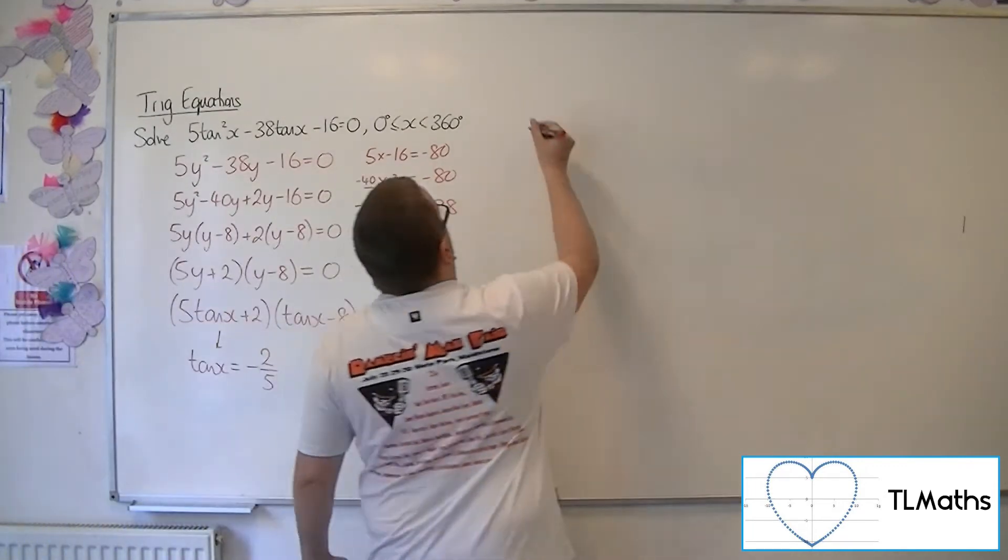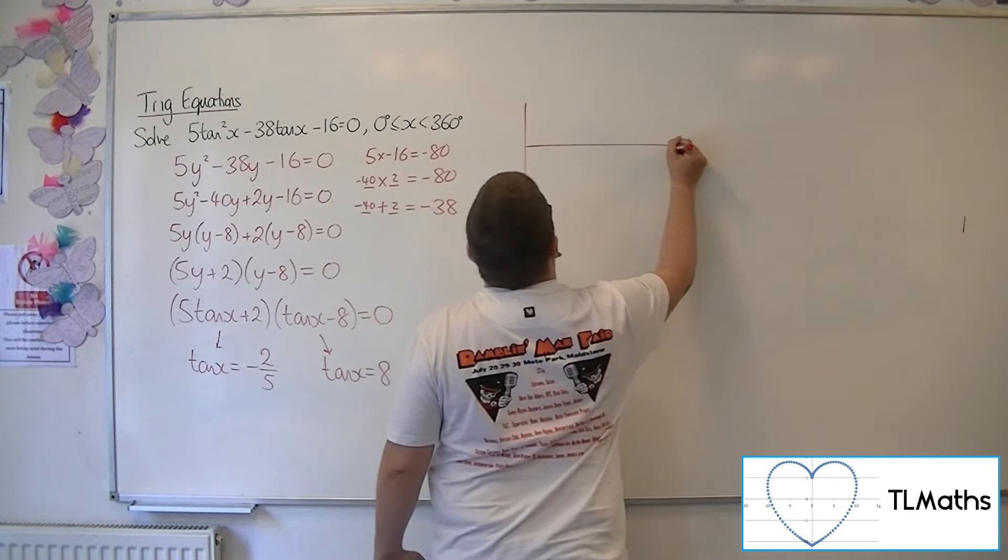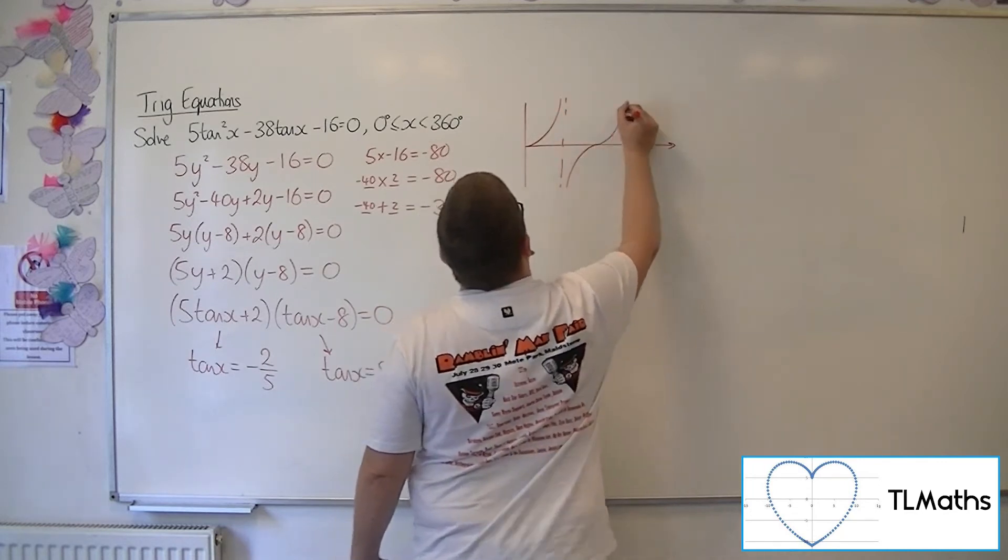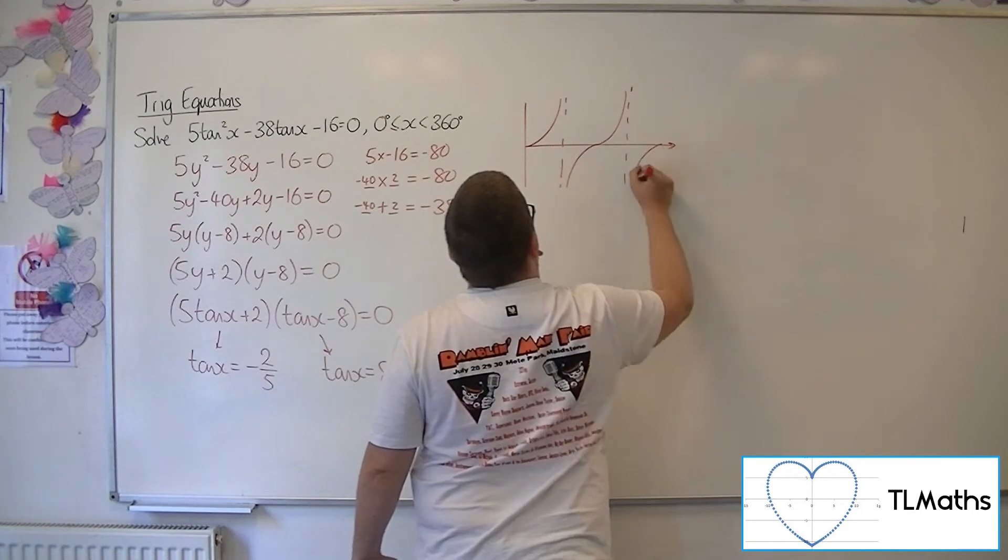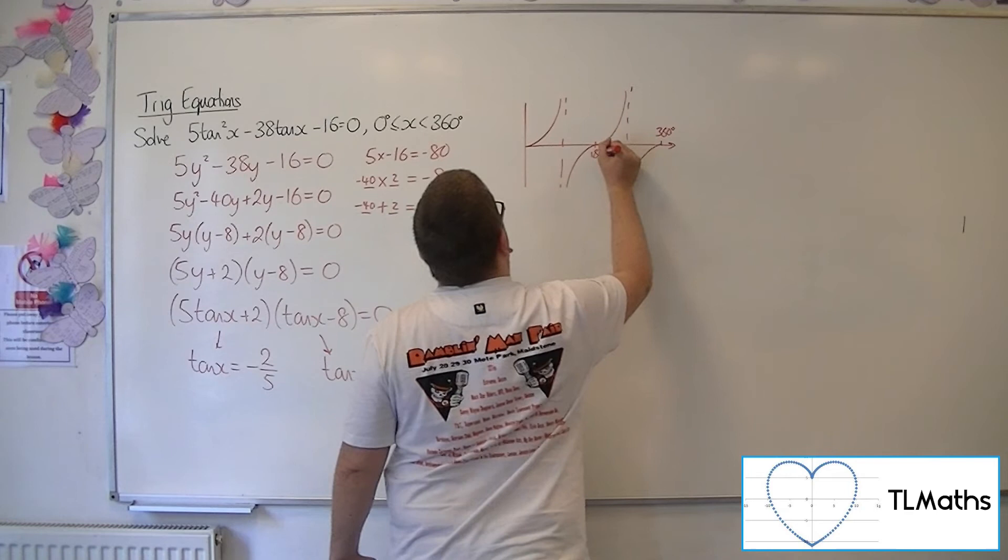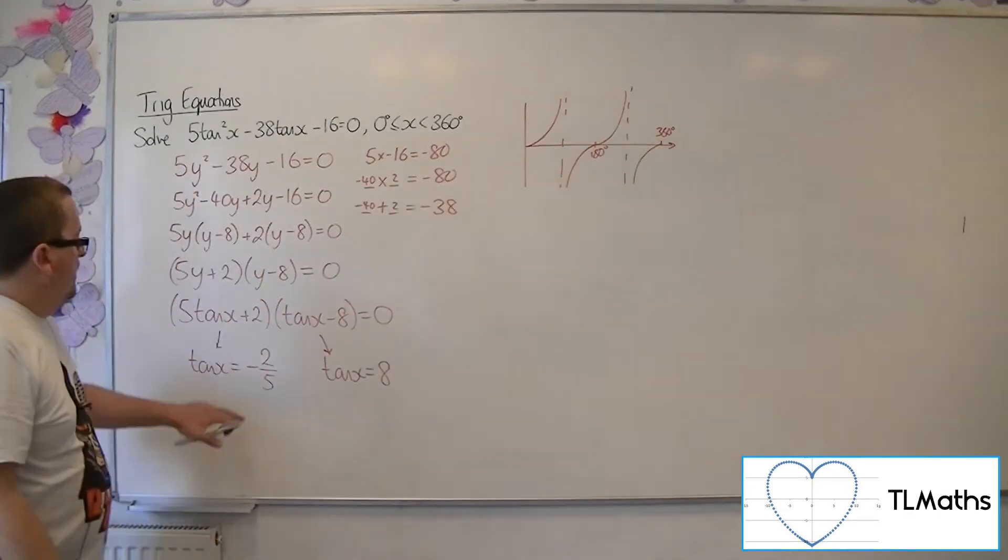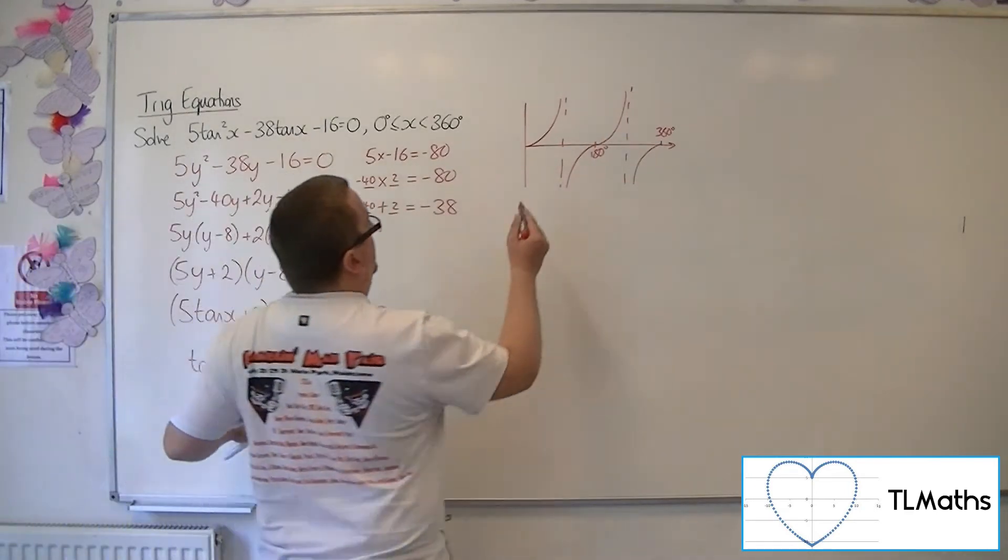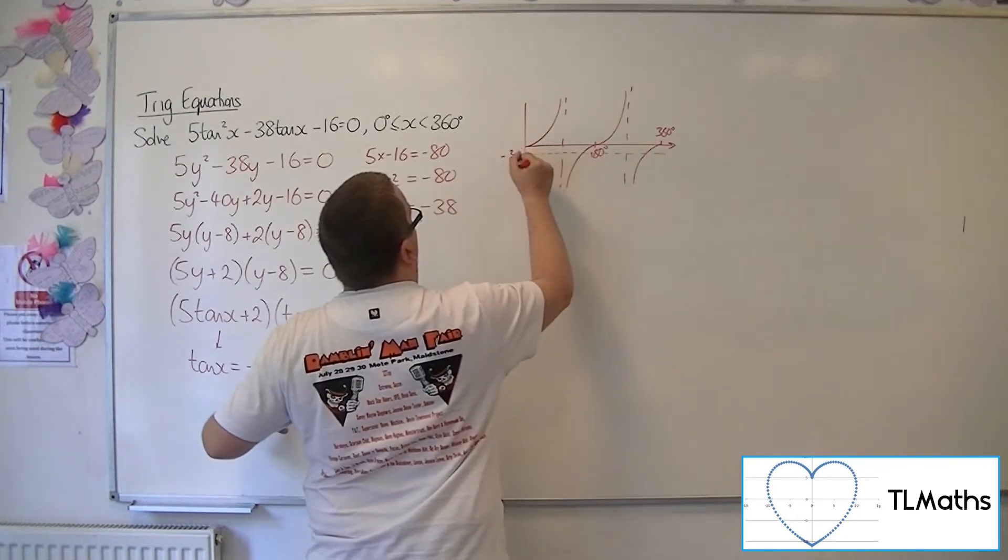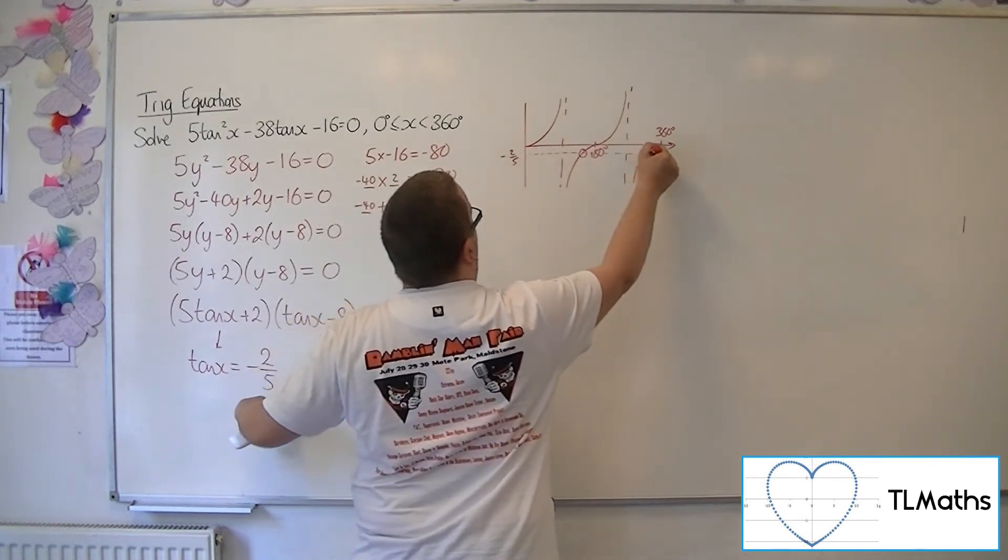So let's sketch tan between 0 and 360. So there's tan. Now, minus 2 fifths is going to be somewhere down here. So I'm going to get two solutions, one there and one there.